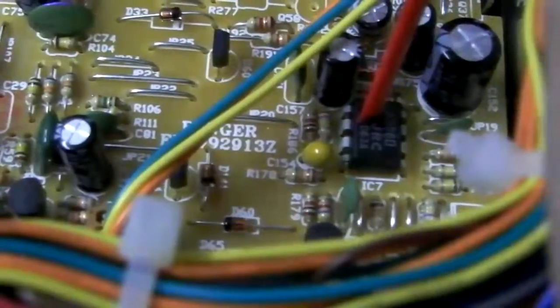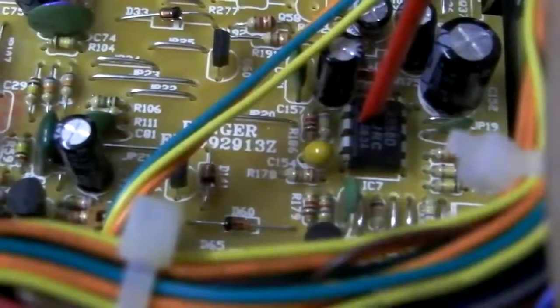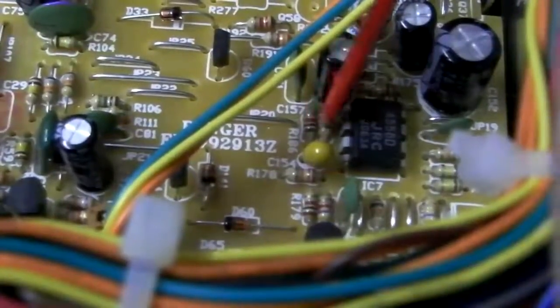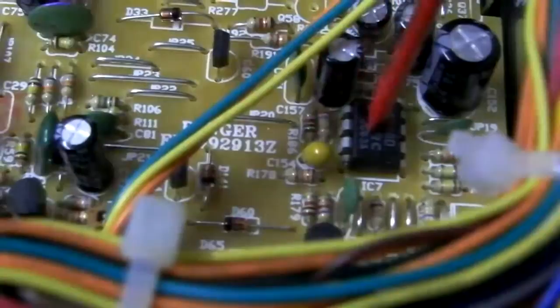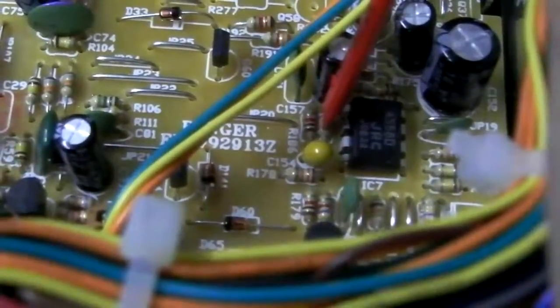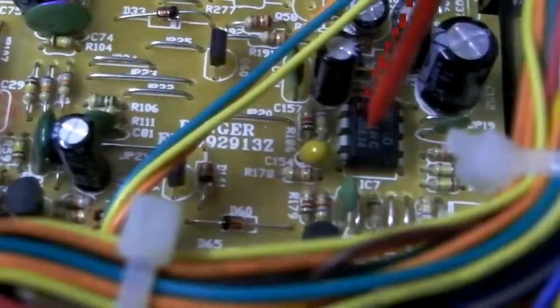There's two resistors we need to remove. It's going to be R186 and R176, and they're the two resistors located right next to IC7 here. So, R186 and R176 right next to your IC7.